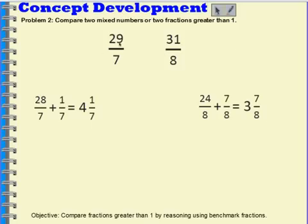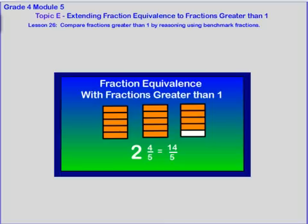29 sevenths is equal to 4 and 1 seventh, so 29 sevenths is greater than 31 eighths. That will take care of things for lesson 26, where we've been comparing fractions greater than 1 by reasoning using benchmark fractions.